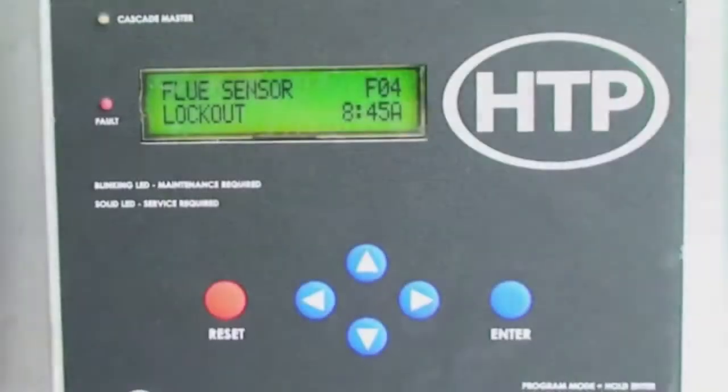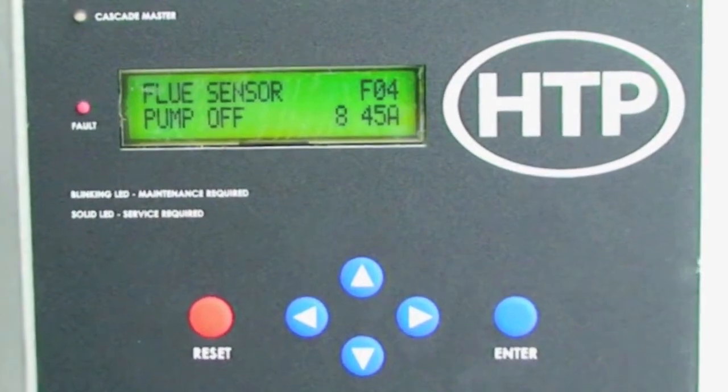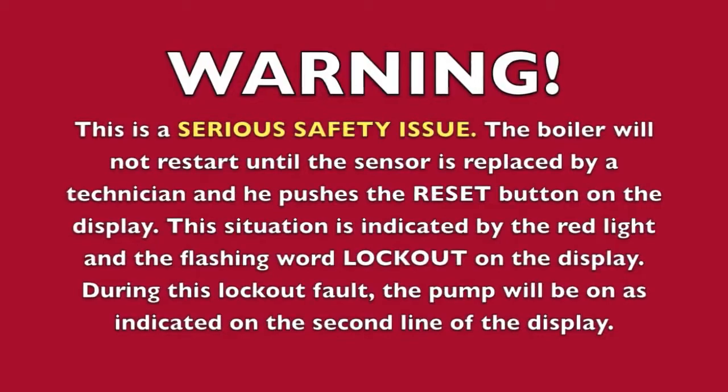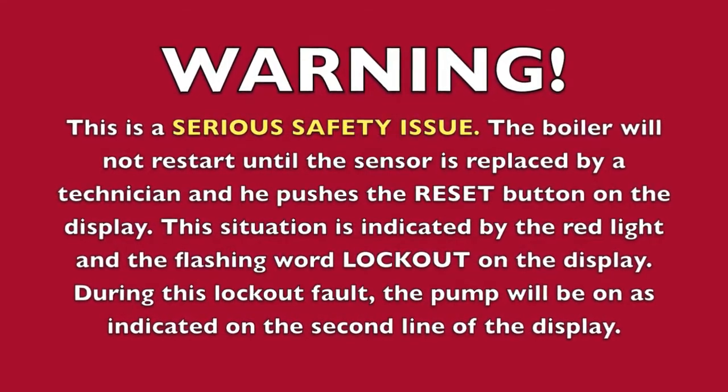If you are getting an FO4 code in the display, this indicates that the flue temperature at the sensor of the boiler is either too high or has failed. This is a serious safety issue.